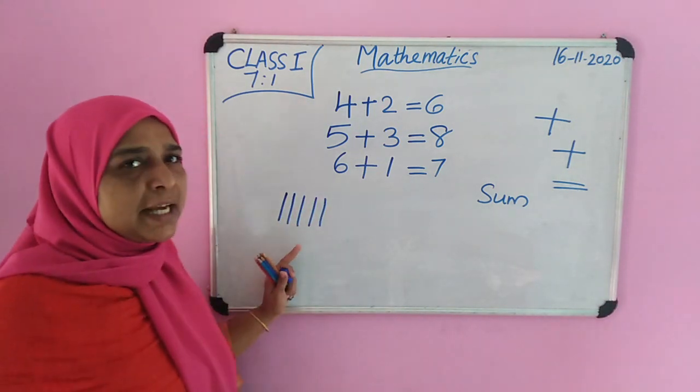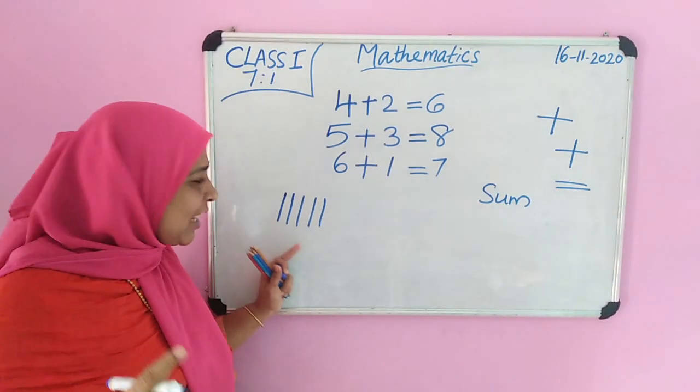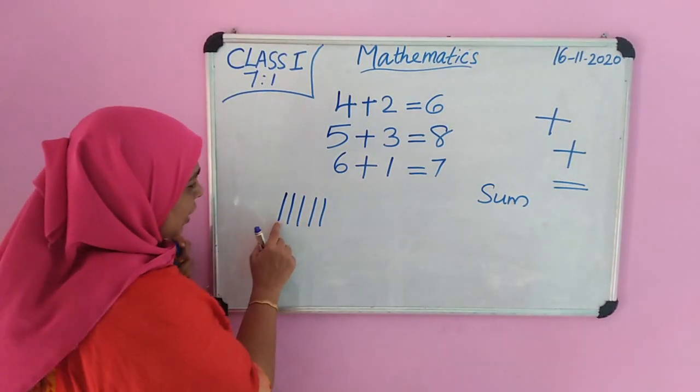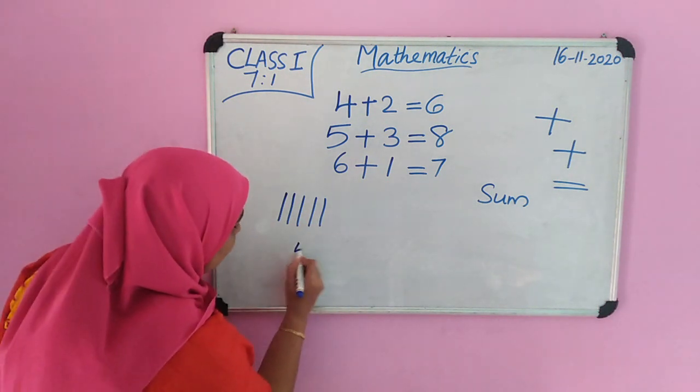How many lines here? Tell me children. Okay. Very good. How many? 1, 2, 3, 4, 5. 5.